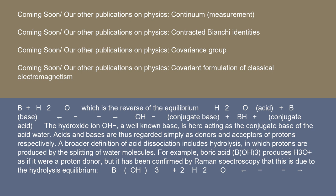Acids and bases are thus regarded simply as donors and acceptors of protons, respectively. A broader definition of acid dissociation includes hydrolysis, in which protons are produced by the splitting of water molecules. For example, boric acid.